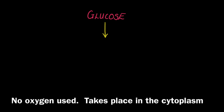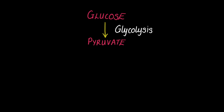In anaerobic respiration, no oxygen is used and it takes place in the cytoplasm of the cell, the same place where glycolysis took place.